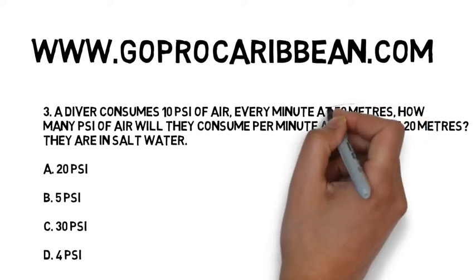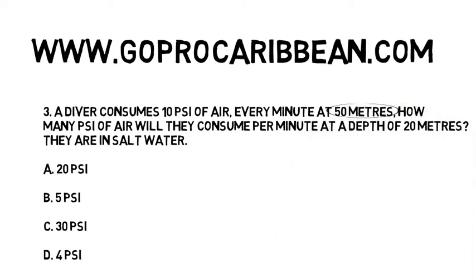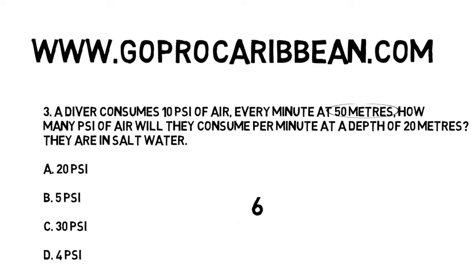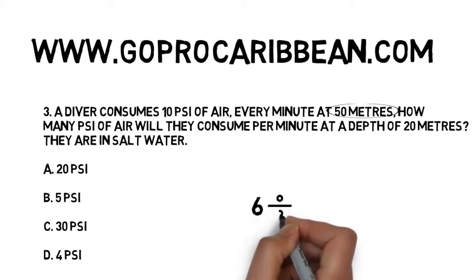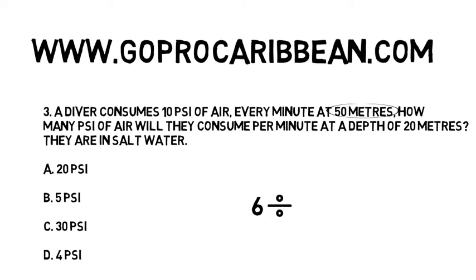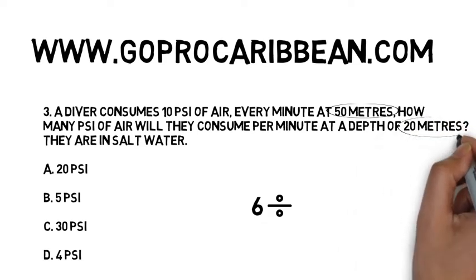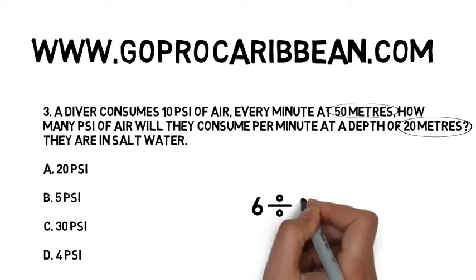So what are we going to do? The first thing we do when we are using the first depth second depth method is to divide the starting depth by the ending depth. We're in salt water, the starting depth is 50 meters, so it's six divided by the second depth — 20 meters, still in salt water — three atmospheres at 20 meters of salt water. So six divided by three gives us our first calculation.